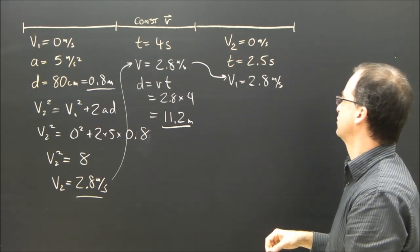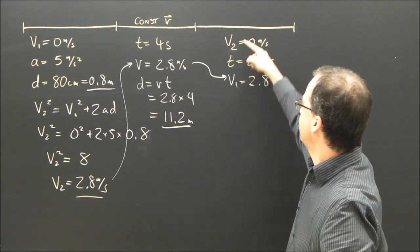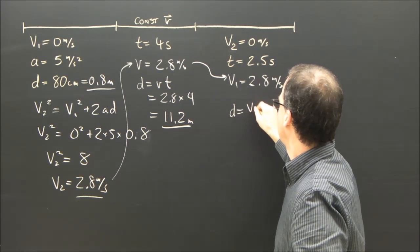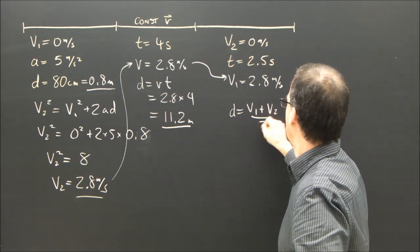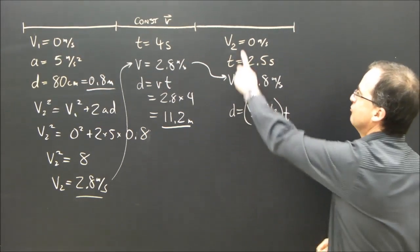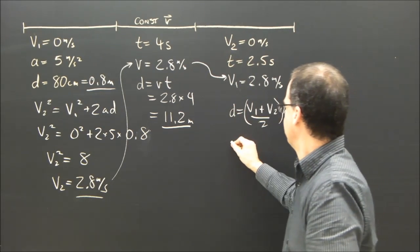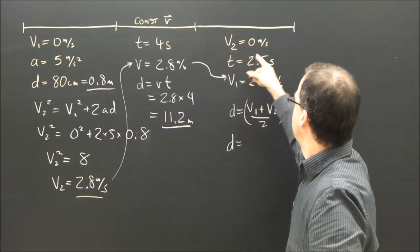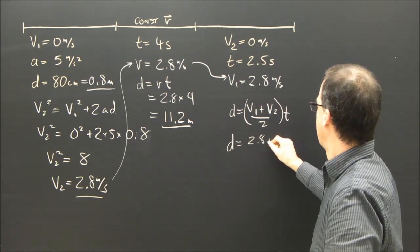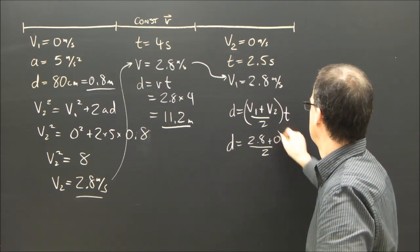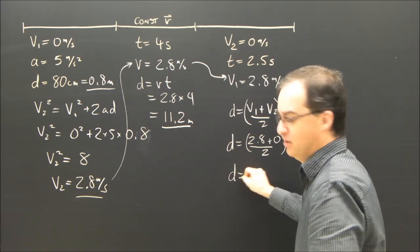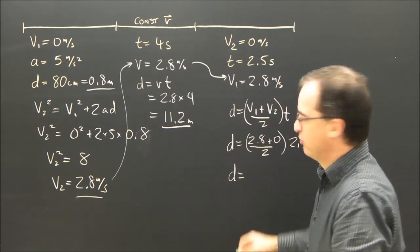How far did it travel in the third section? Well, I'm looking for d. I've got v₁, v₂, and t. So I'm going to use this equation: d = (v₁ + v₂)/2 × t, because it's got all the variables I'm discussing. v₁, v₂, t, and it's got d which is what I'm looking for. So d = (2.8 + 0)/2 × 2.5. So d equals 3.5 meters.